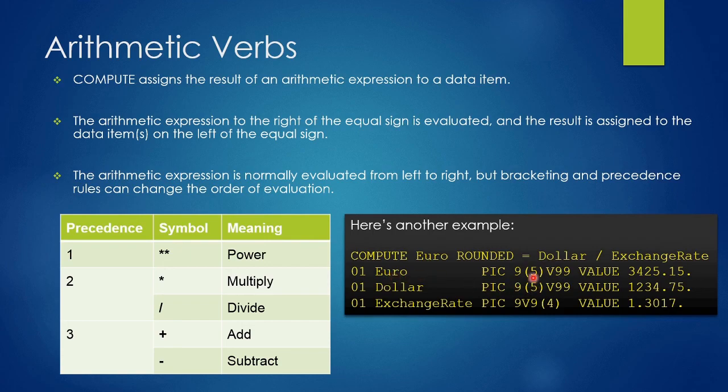Euro variable is defined with PIC 9(5)V99 and the initial value assigned is 3425.15. Similarly, dollar is defined with PIC 9(5)V99 and the initial value assigned is 1234.75, and the exchange rate is defined with PIC 9V9(4) and the value assigned to it is 1.3017. Here is the table which shows before and after value of all these three variables.